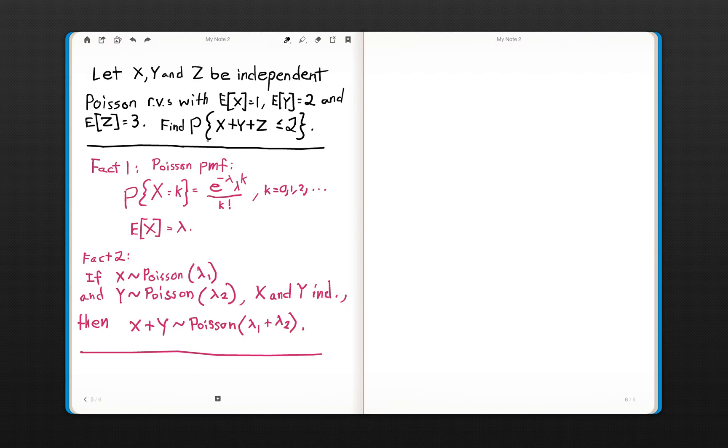then the sum, and I'll go ahead and write this down, X plus Y plus Z, by fact number 2, you know is distributed also as a Poisson random variable with parameter or rate, the sum of these, 1 plus 2 plus 3. So that's a real nice property of the Poisson random variable.